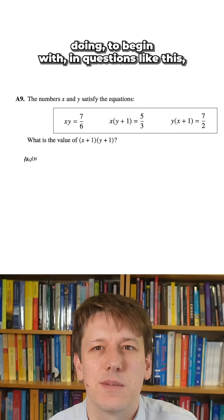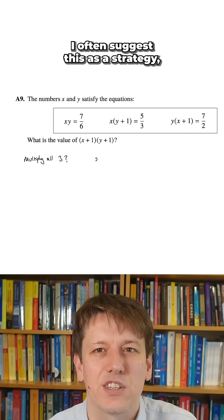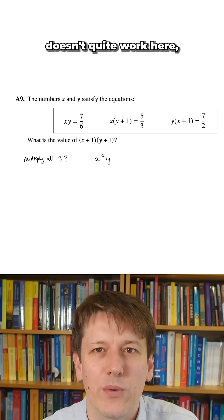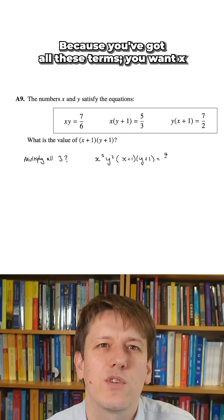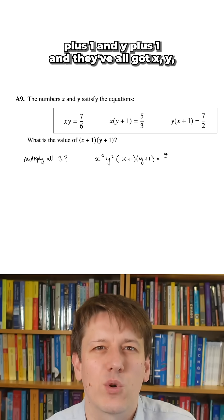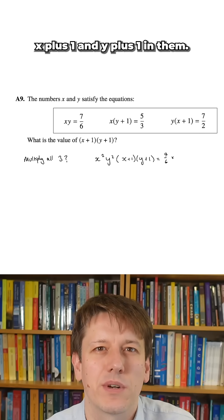So one of the things you might think about doing in questions like this—I often suggest this as a strategy, it doesn't quite work here but it almost will—is to just multiply all of the equations together. Because you've got all these terms: we want (x+1) and (y+1), and they've all got x, y, (x+1), and (y+1) in them.